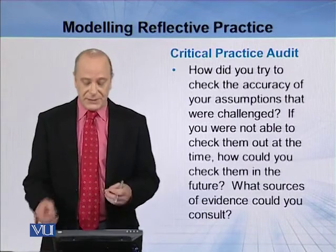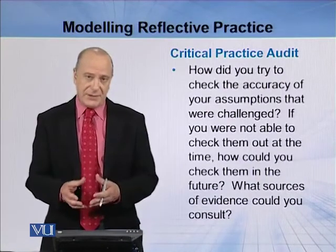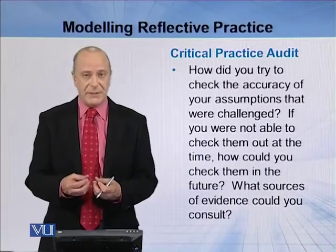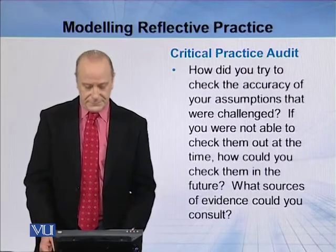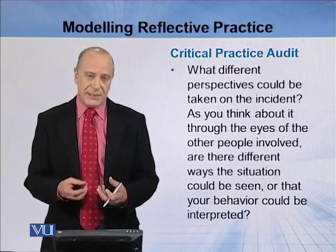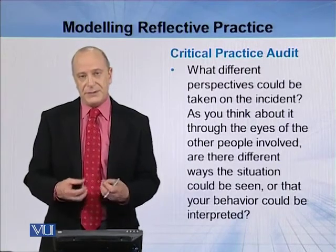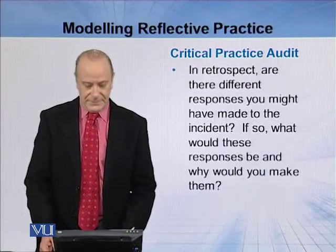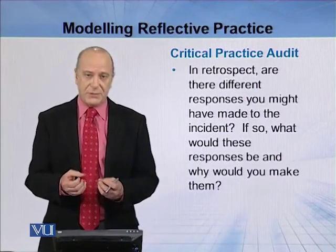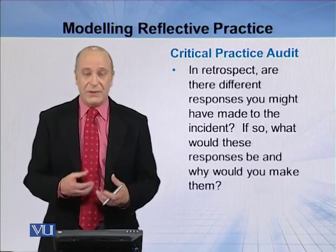Part of the Critical Practice Audit is also to think about the evidence you have as a teacher and check its accuracy. Are you really seeing what actually happened, or are you looking through your own self lens — the autobiographical lens — which may be skewing the reality? This is where the other lenses become important: the student lens, the colleagues' lens, and also the theory lens. Through these four lenses we see a very critical approach — self-critical by the teacher and critical of the processes taking place, looking not only within but also without the school.